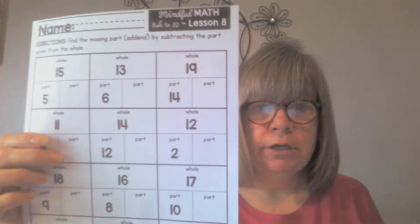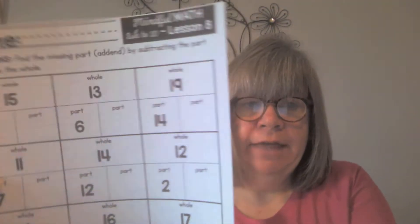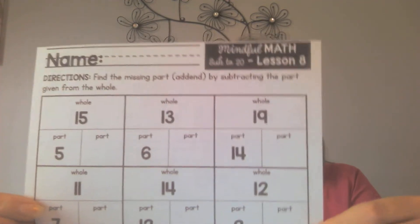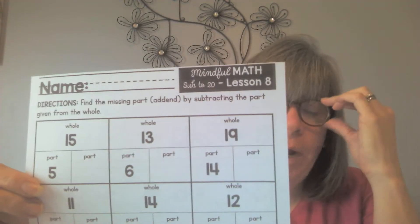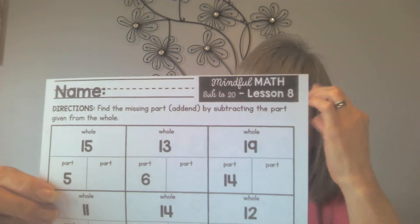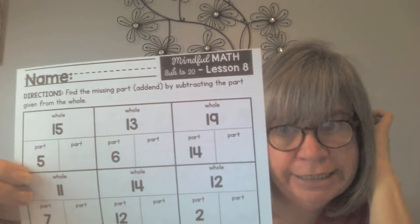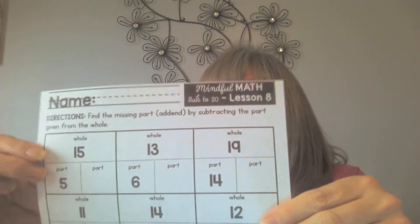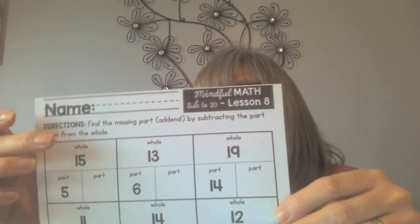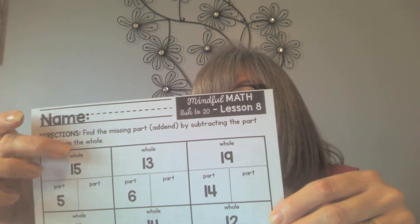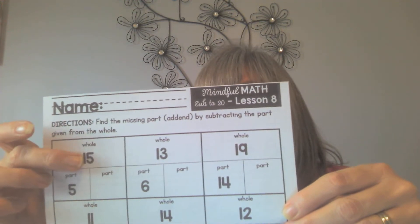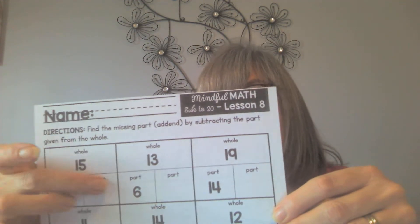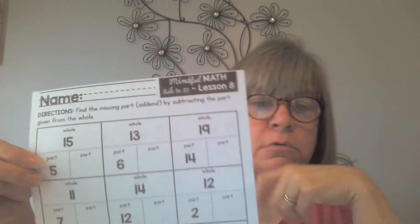The next page is one we've done before — whole-part-part. We did it way back in the fall when we were first learning about addition and subtraction. The whole is equal to, or the same as, the sum of the two parts.